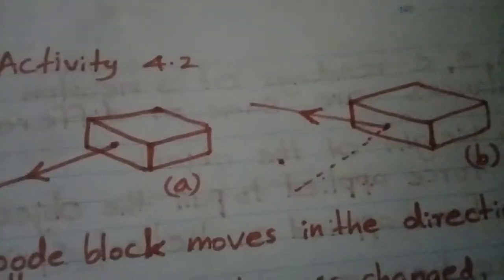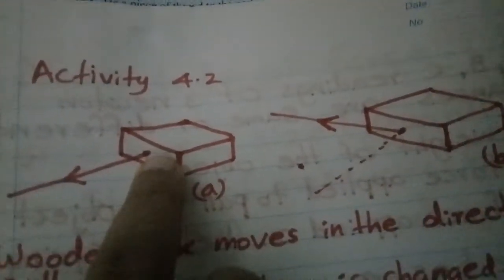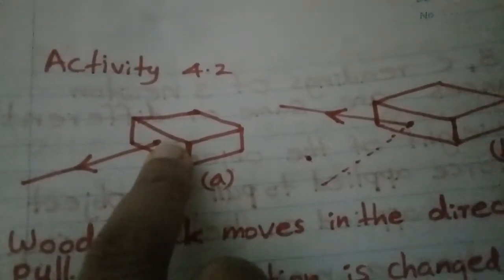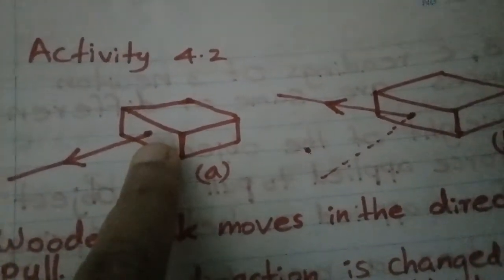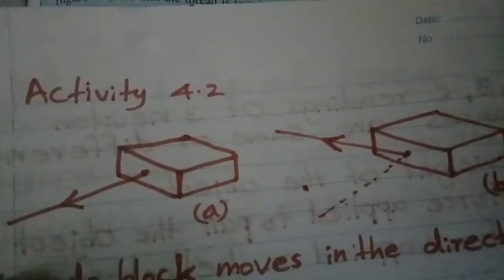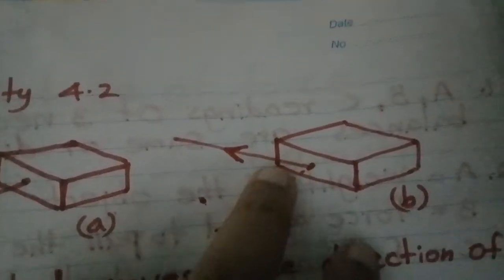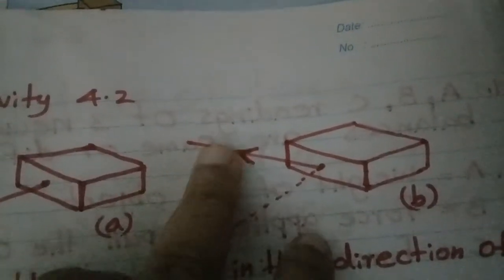Now let's look at Activity 4.2. Here you can see two wooden boxes. A string is attached at the center of one face and we are pulling it horizontally in one direction. In setup B, we have changed the pulling direction to a different way.